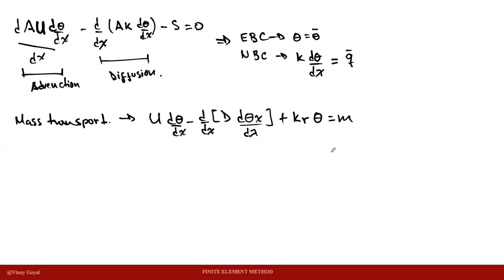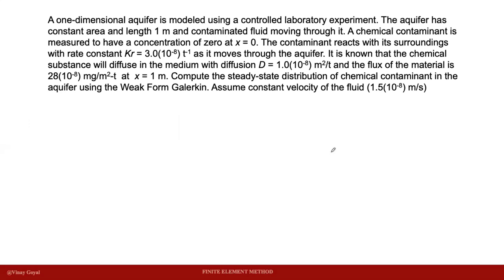A one-dimensional aquifer is modeled using a control laboratory experiment. The aquifer has constant area and length one meter with contaminated fluid moving through it. A chemical contaminant is measured to have a concentration of zero at x equals zero — that's our essential boundary condition. The contaminant reacts with its surroundings with rate constant kr. The diffusion coefficient D and the flux at x equals one are also known. We want to compute the steady-state distribution of the chemical contaminant using the weak form Galerkin, assuming constant fluid velocity.